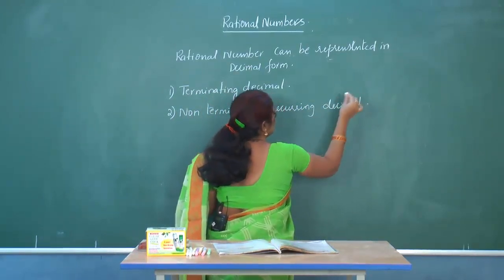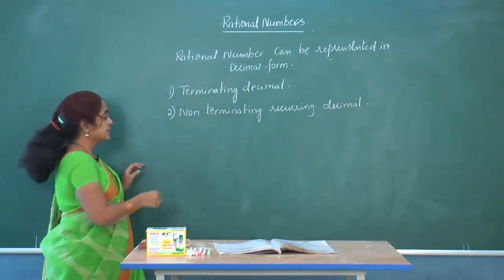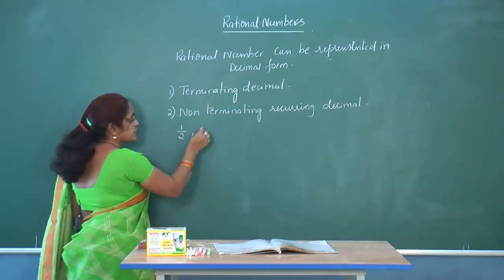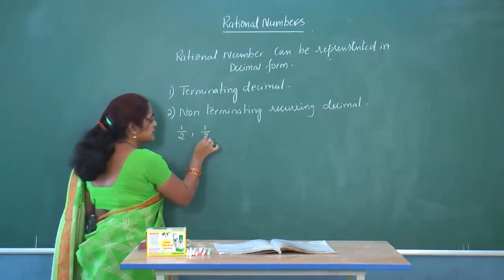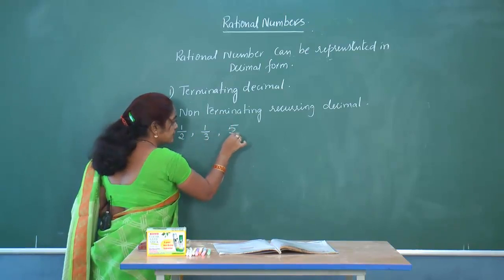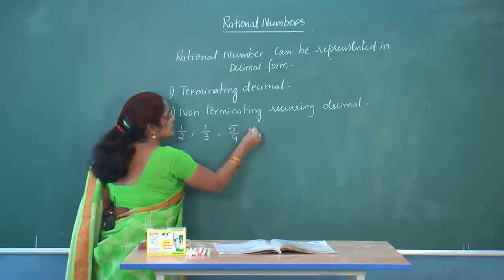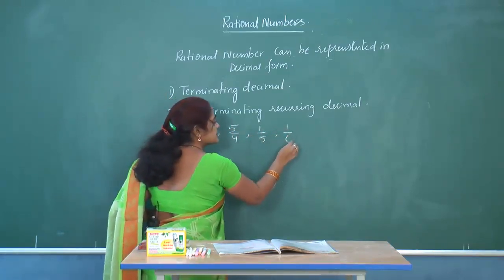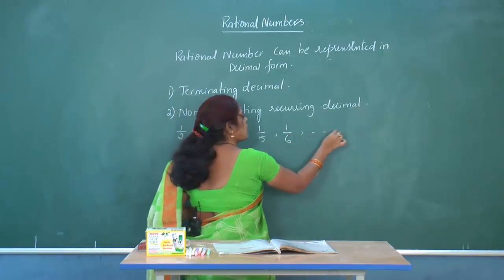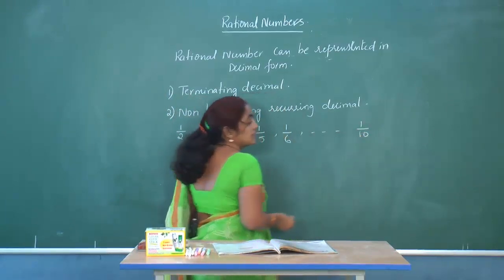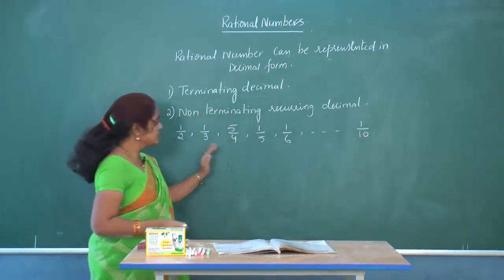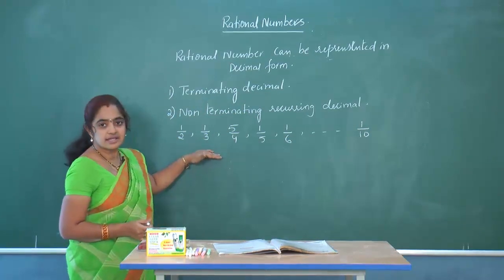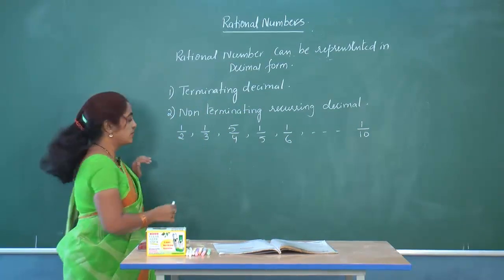Now we will see some rational numbers. If I take 1/2, 1/3, 5/4, 1/5, 1/6, and 1/10 — I want to convert these rational numbers into decimal form.